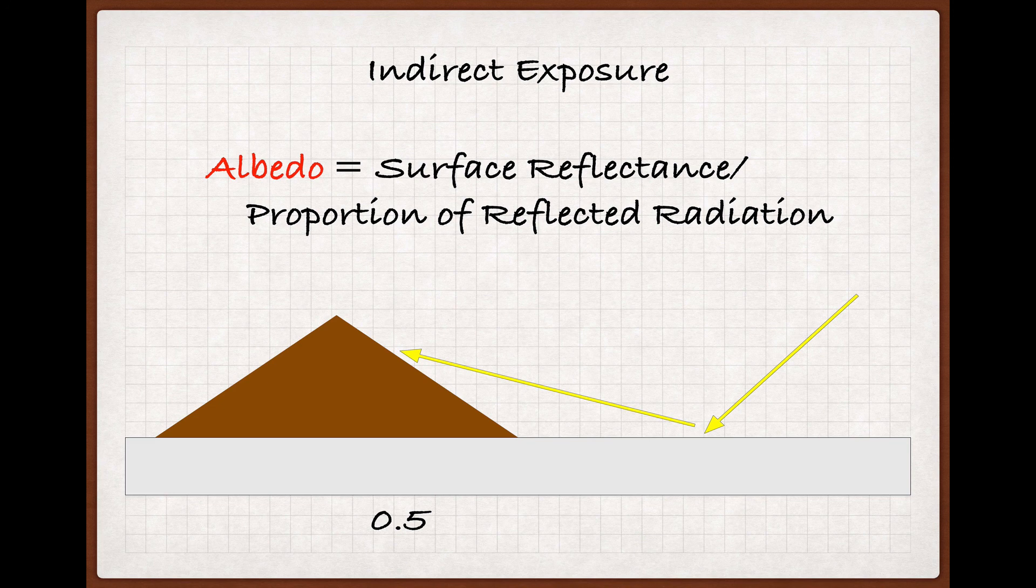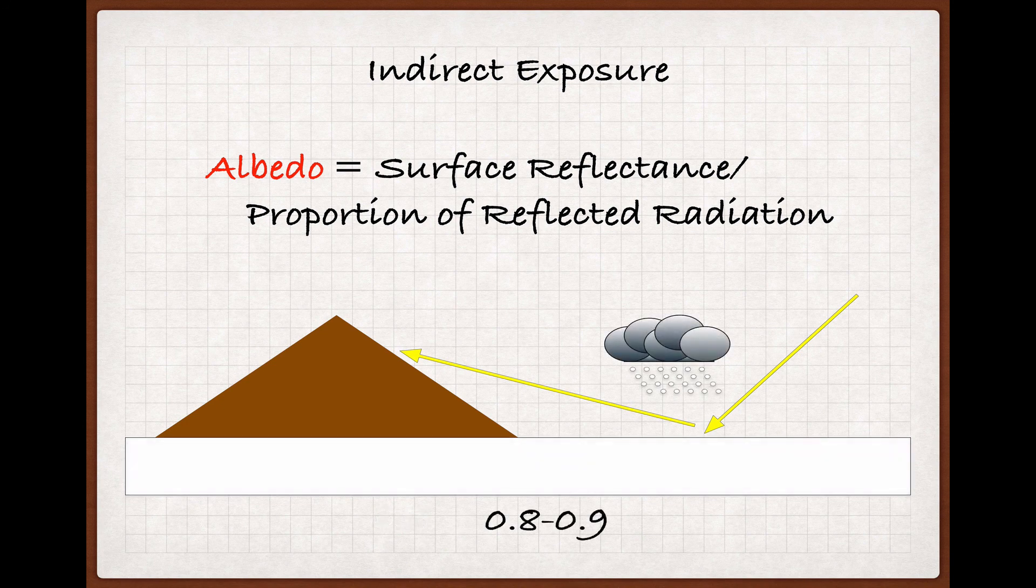For the sake of comparison, snow, depending on how fresh it is and other factors, will have an albedo of around 0.8 to 0.9, which is why it's important to wear eye protection when out skiing and such.